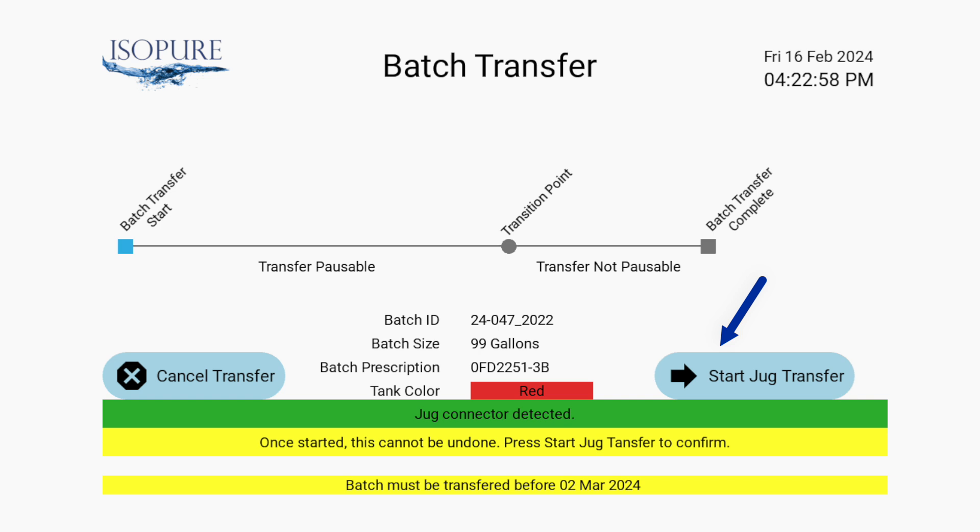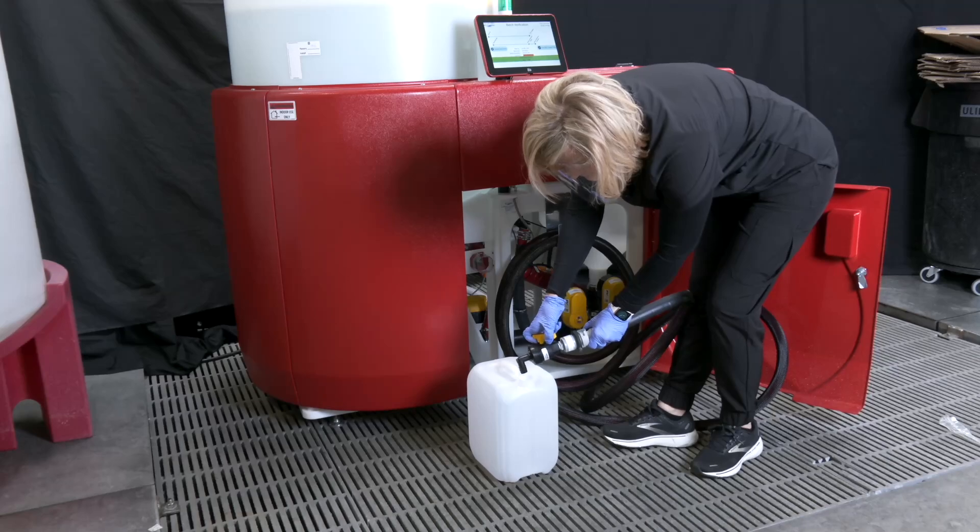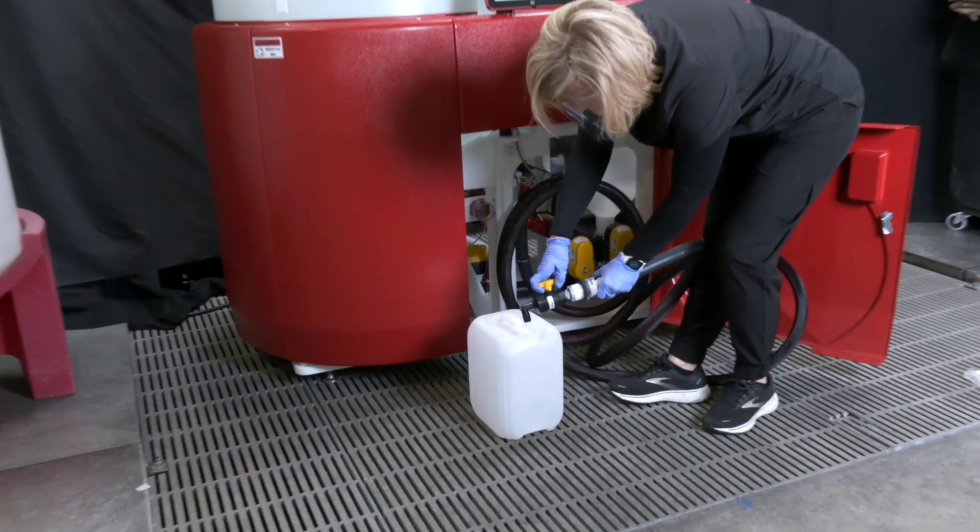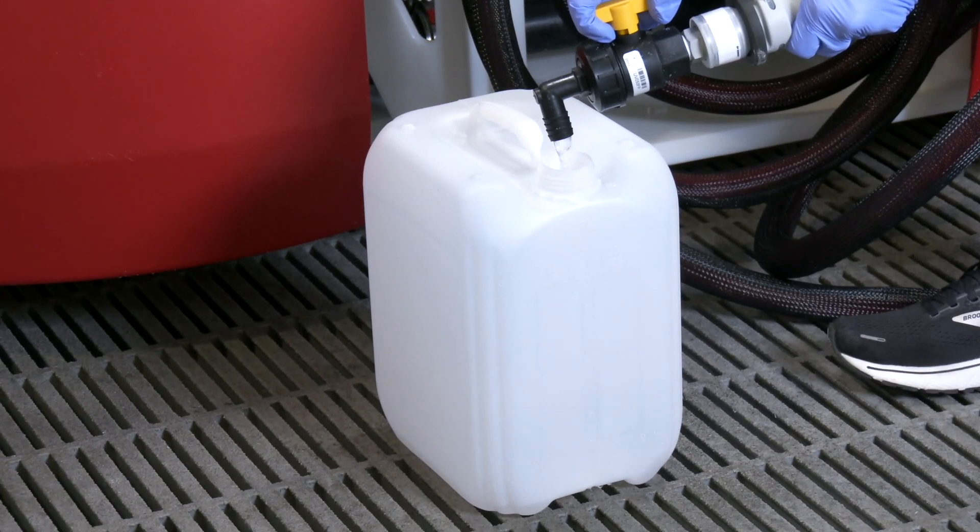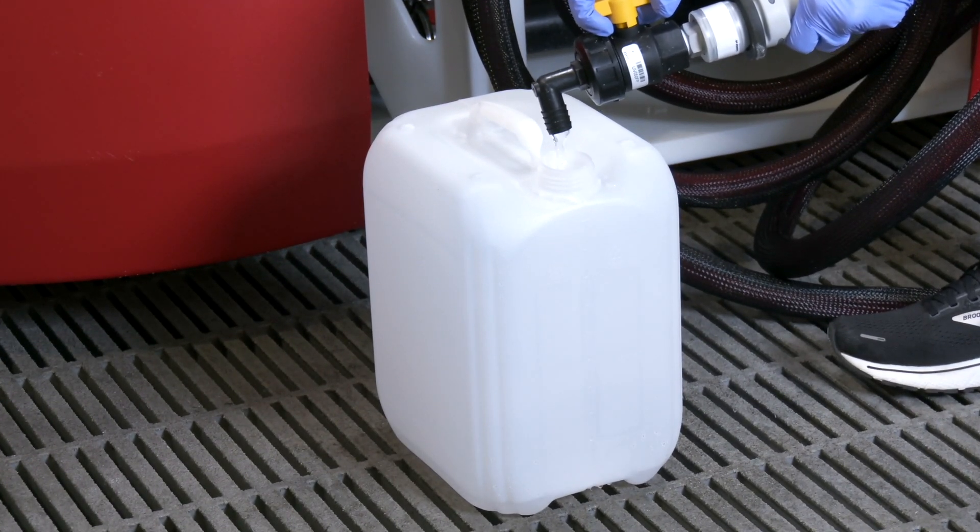Once Acumix detects that the jug transfer assembly has been connected, the start jug transfer option will appear on the screen. Select this option, then position the assembly over the jug opening. Using the on-off valve to regulate the outflow of acid, fill as many jugs as required.